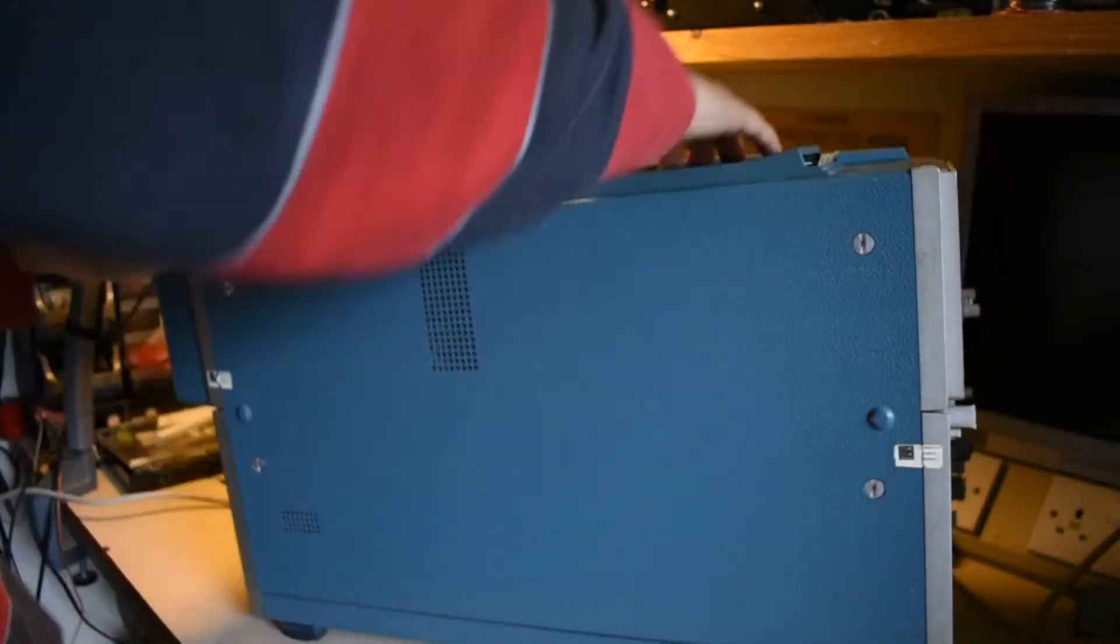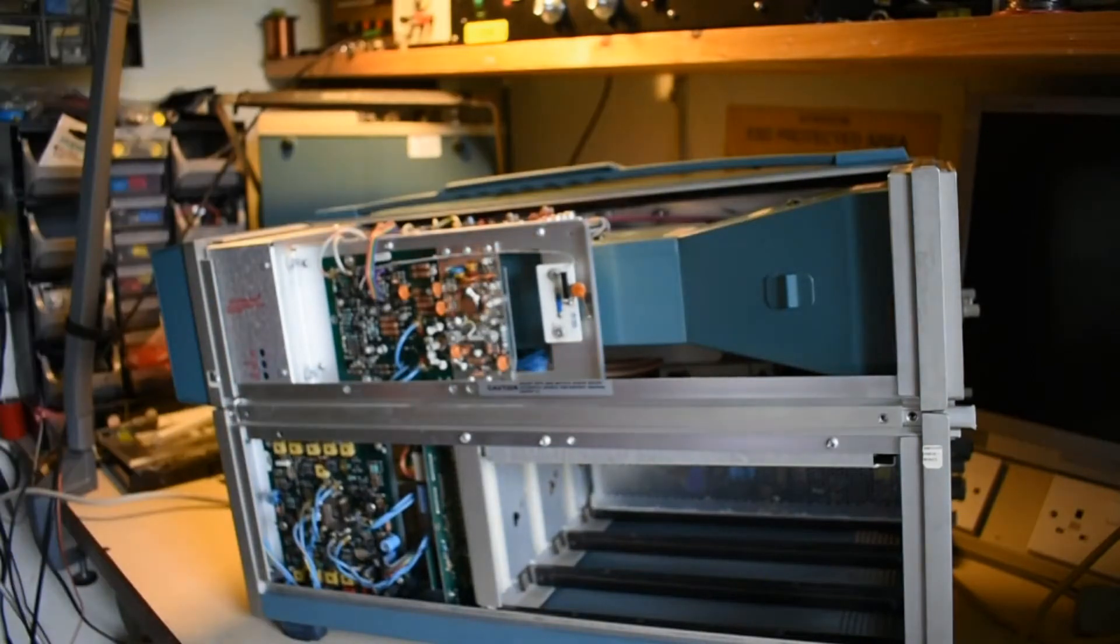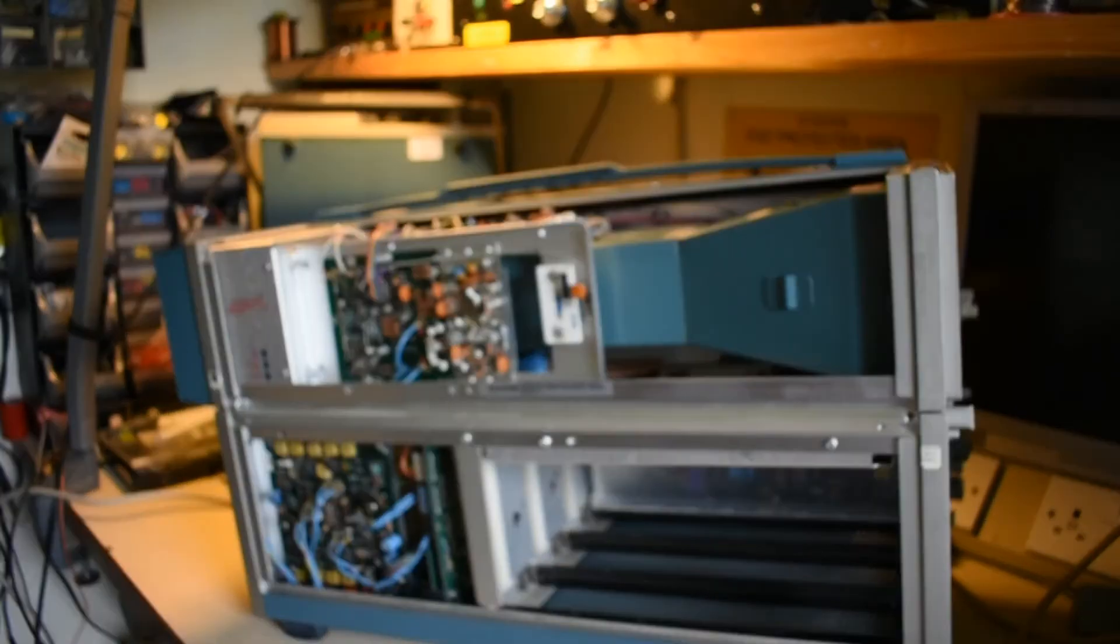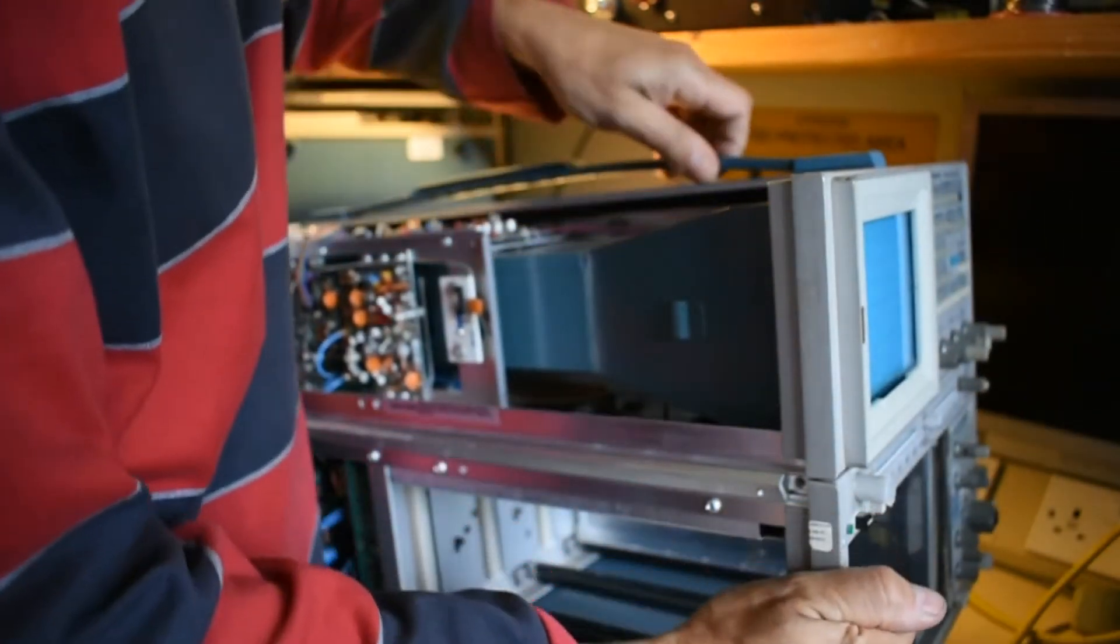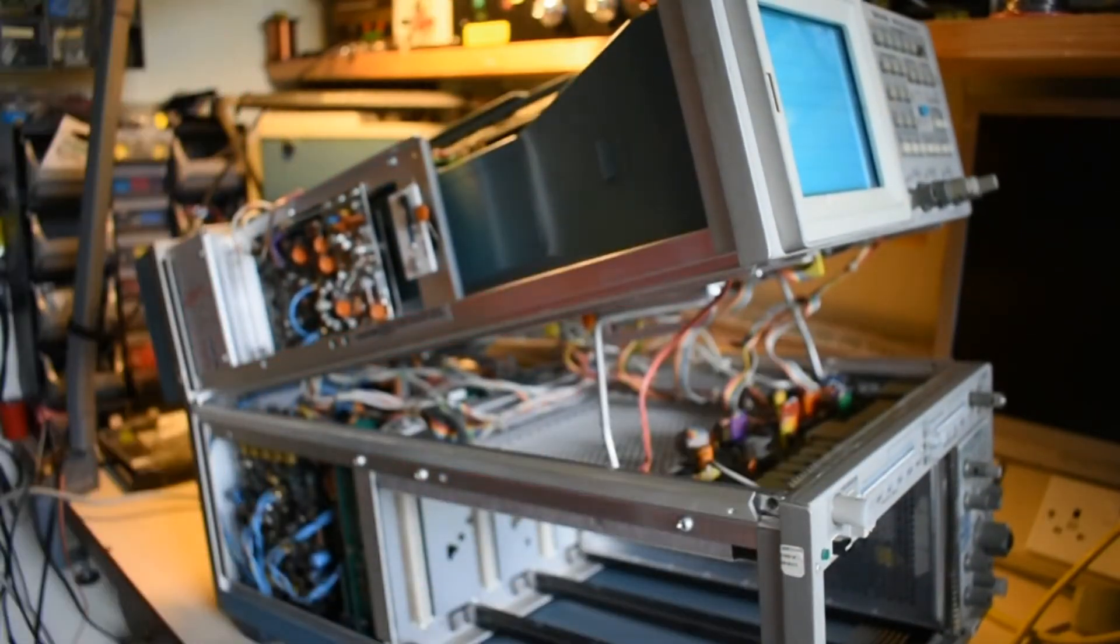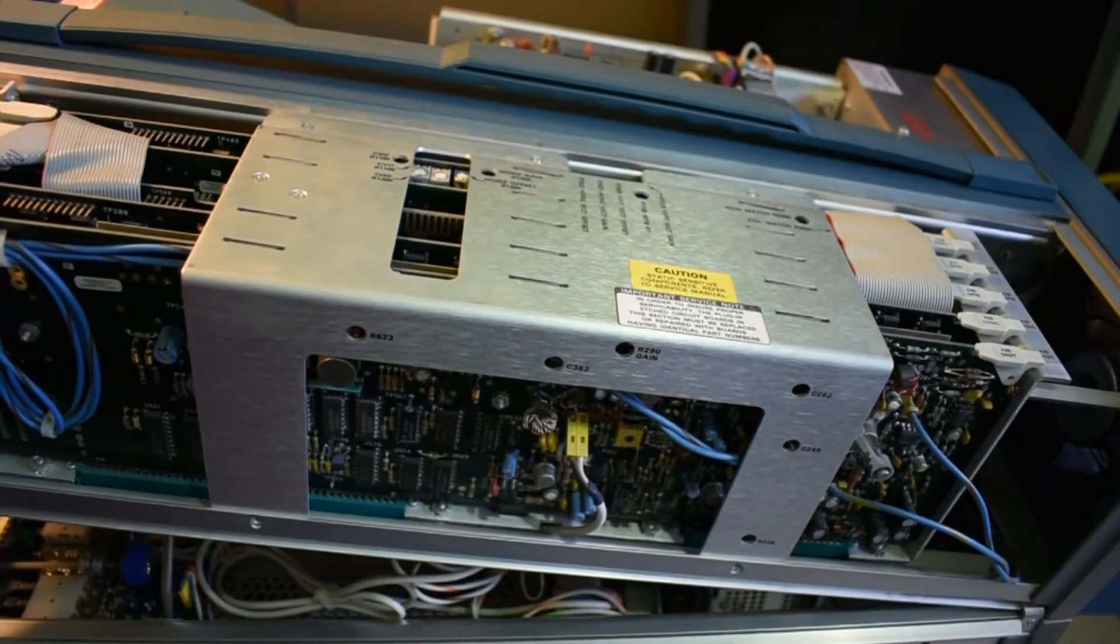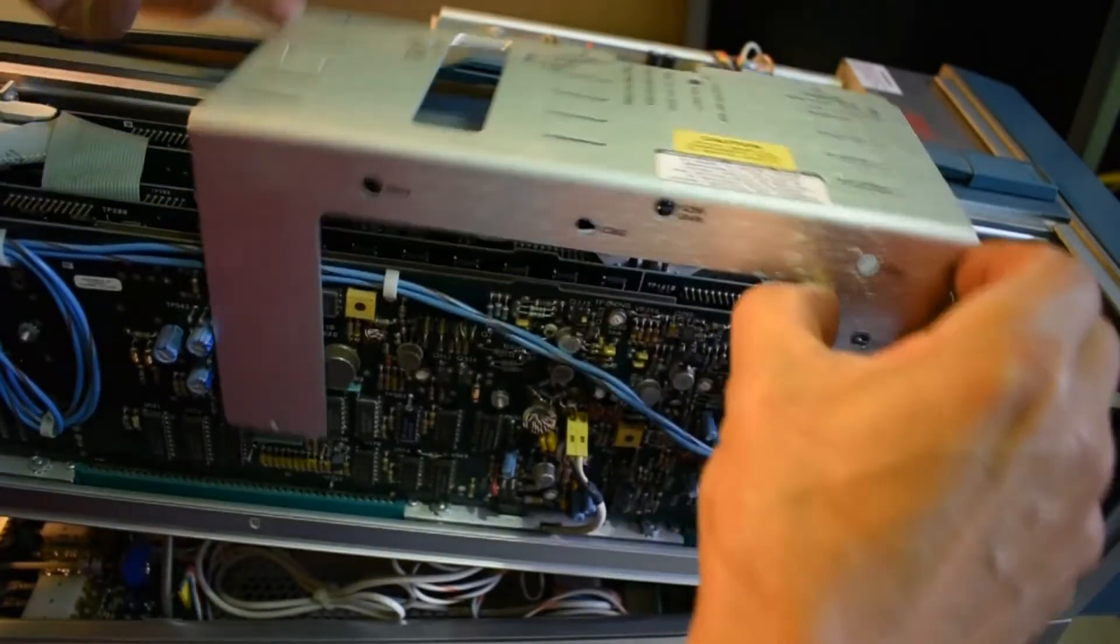The sides just come off these scopes once you've undone these for quite quick access. And once the two screws are taken out, you can also lift up this part for a little bit better access. These are the digital circuits in here for the storage.